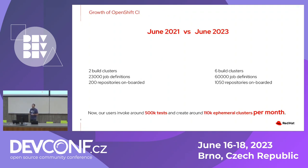Why is our use case different? You can see our growth from June 2021 to June 2023. We had two build clusters, 23,000 job definitions, and 200 repositories. Now we have six build clusters, 60,000 job definitions, and more repositories. Our users execute half a million tests every month, and 0.1 million ephemeral ad-hoc clusters are created.